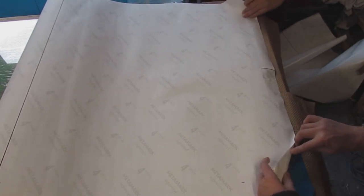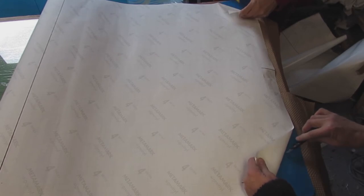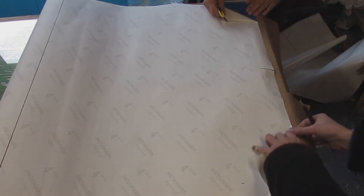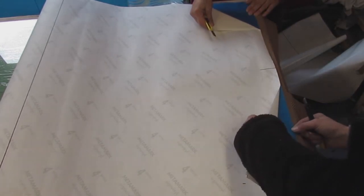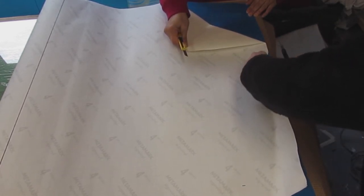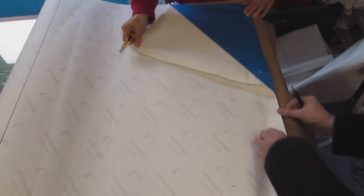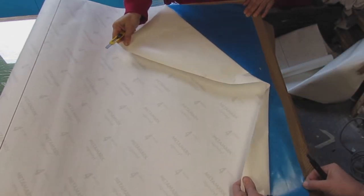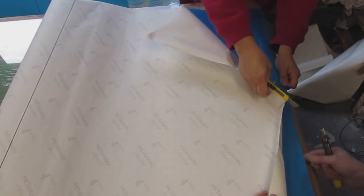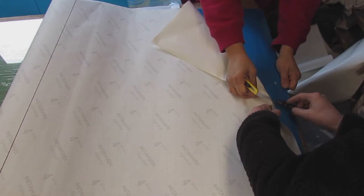Now there is carrying paper on the underneath and the top of the vinyl. And what you can see us doing here is peeling back the carrying paper from the underside of the vinyl. The underside of the vinyl is the sticky side, so at the moment we have that underside facing up.